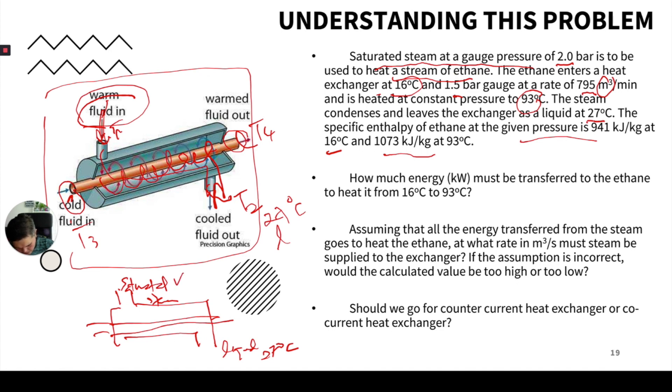You have liquid at 27 degrees Celsius, saturated steam where you can know the temperature from the steam table, 16 degrees ethane coming in and 93 degrees ethane coming out being heated at constant pressure at 1.5 bar gauge. This is 2.0 bar gauge.